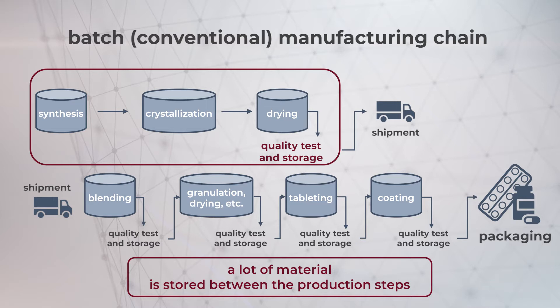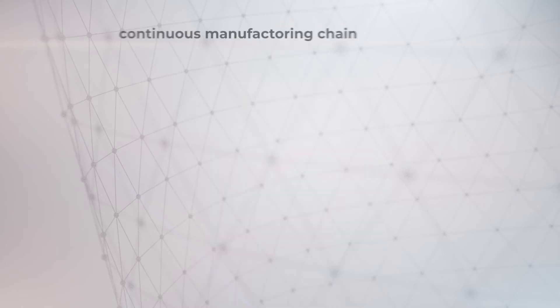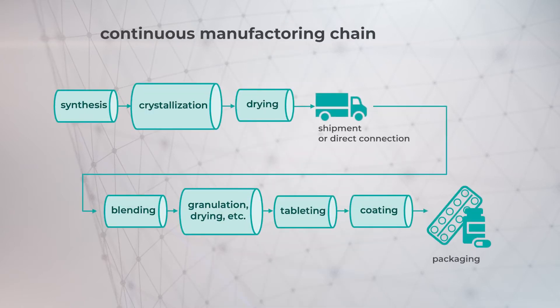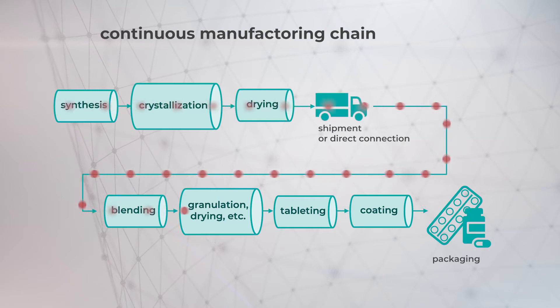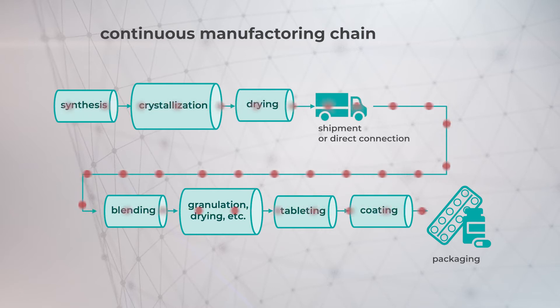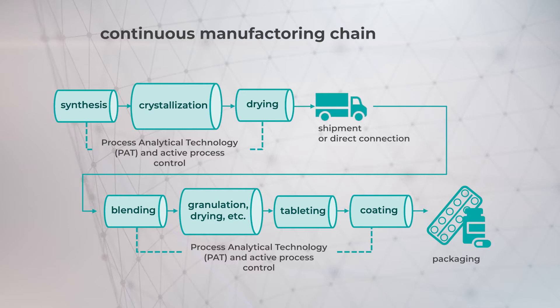This means that you need floor space in order to accommodate your production processes and the material that you need to store. Continuous manufacturing chains have a completely different approach to batch manufacturing because the material moves directly from one production step to the next, without storage. The different pieces of equipment are directly connected, which enables continuous material transport. So synthesis, crystallization, including product cleaning, are directly connected and work continuously. In continuous manufacturing, instead of storing and testing the material after the process, the material is tested during the process.